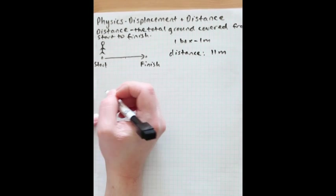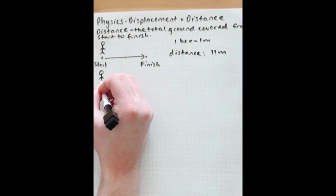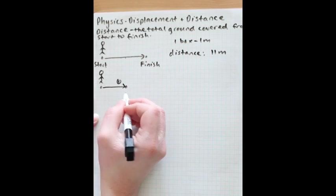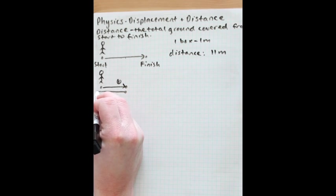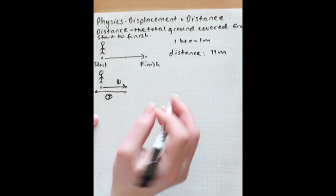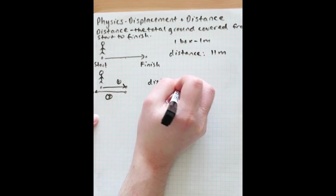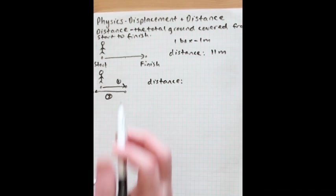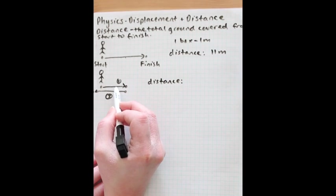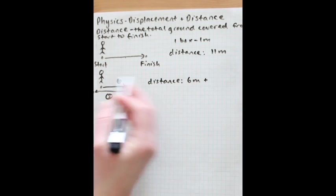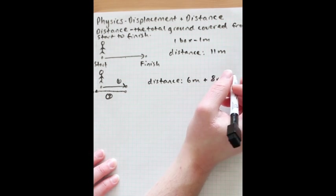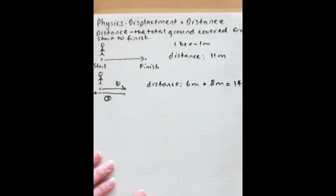Now let's consider somebody walking again. Let's say they start walking from here, and the first part of their walk they finish here. But then they decide to walk in the other direction until they get here. So the total distance they walked would be the total ground covered from start to finish, so we need to add up both parts of the walk. The first part would be six meters, and then we add the second part of eight meters, so the total distance would be fourteen meters. Again, to be clear, distance is the total ground you cover from start to finish.